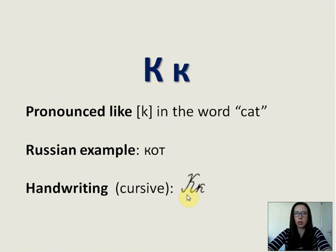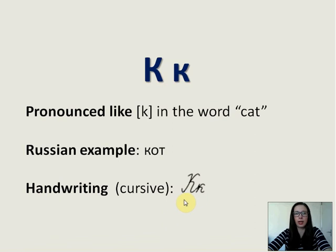К is pronounced like K in the word 'cat.' Russian example: 'кот,' which also means cat. And you can see the cursive.